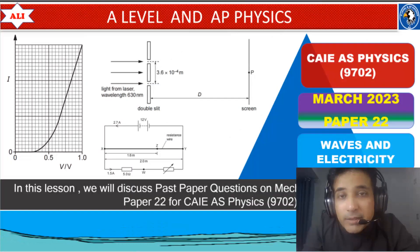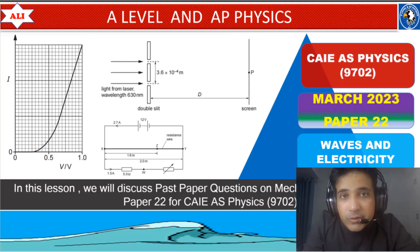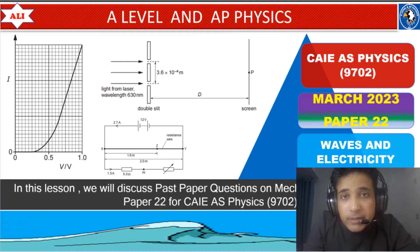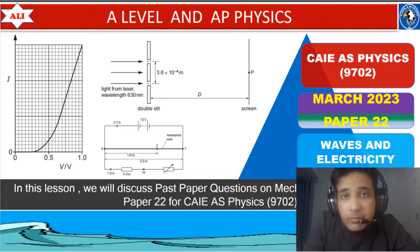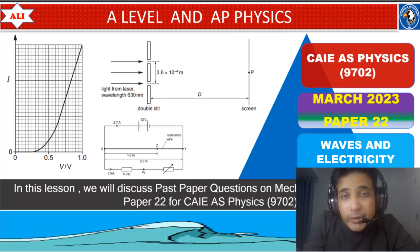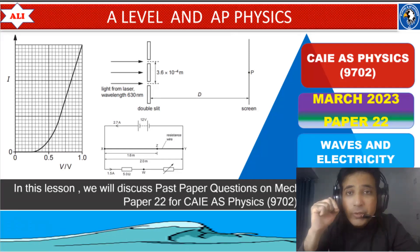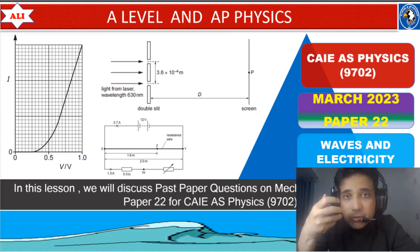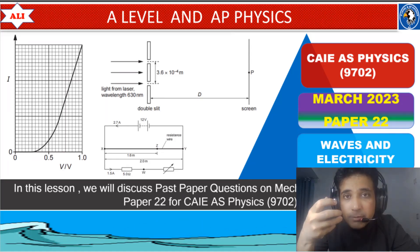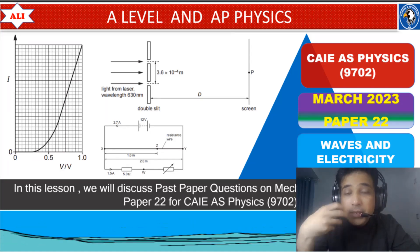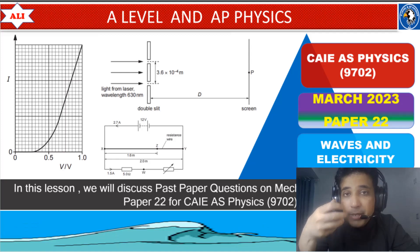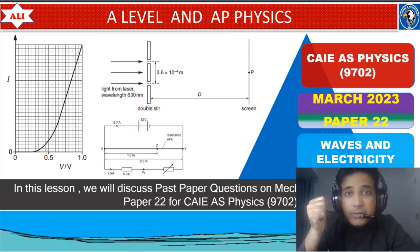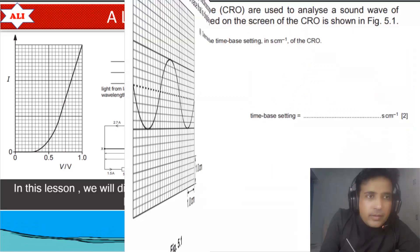Welcome to A-Level and AP Physics. In today's lesson, we will discuss past paper questions on waves and electricity from March 2023, Paper 2, Variant 2. As always, we will discuss these questions in detail so you can improve your conceptual understanding of these topics and have a better understanding of these questions. Let's study together, let's improve together.